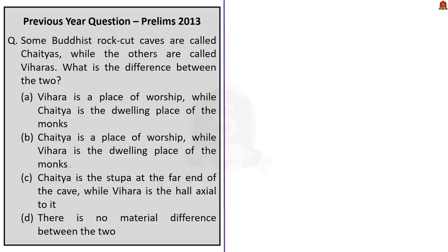The third question was asked in Prelims 2013 and is from culture. Some Buddhist rock caves are called Chaityas while others are called Viharas. What is the difference between the two? Buddhism is an important topic in culture — almost every year one question is asked from Buddhism in prelims, so give it high priority.